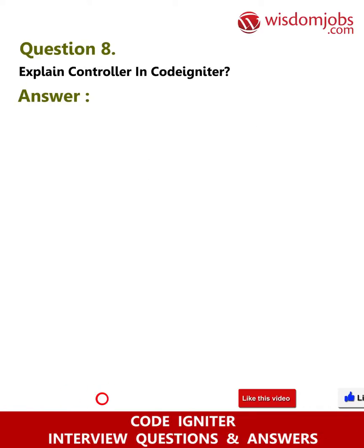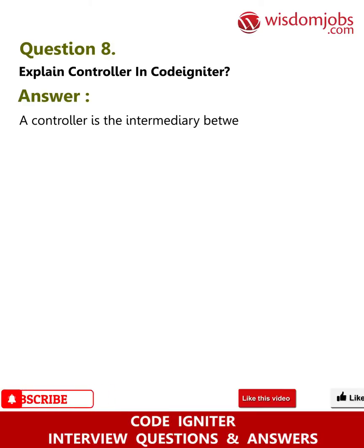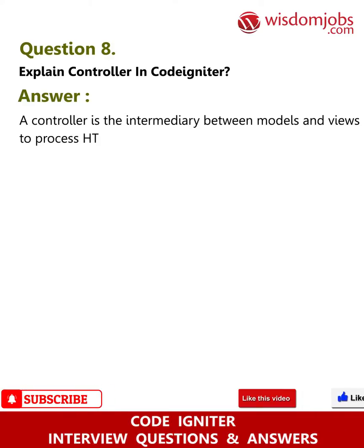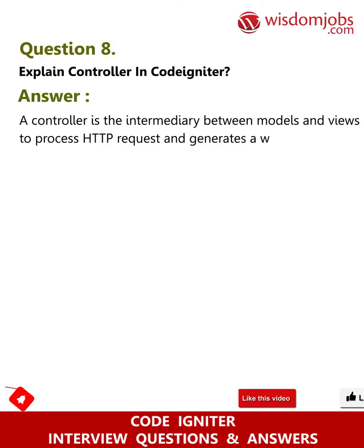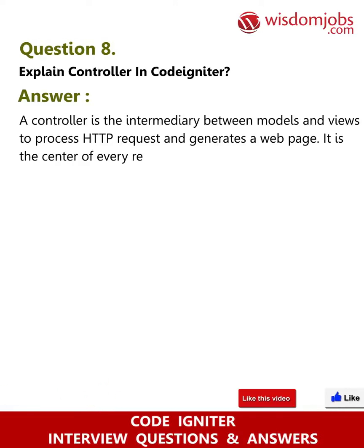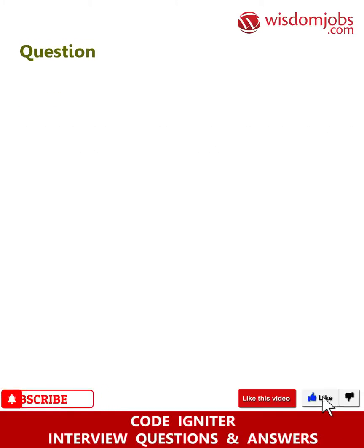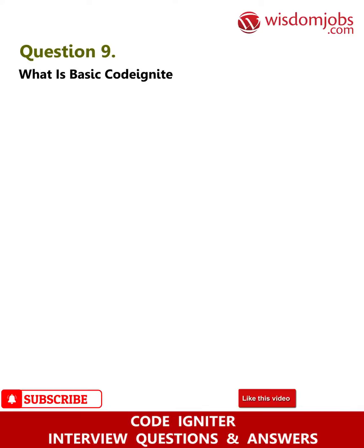Question 8: Explain controller in CodeIgniter. Answer: A controller is the intermediary between models and views. It processes HTTP requests and generates a web page. It is the center of every request on your web application.